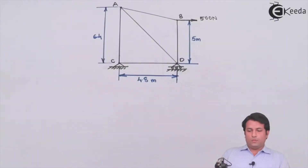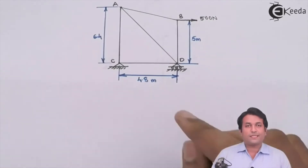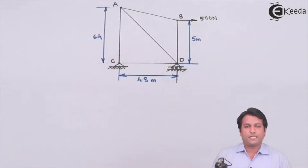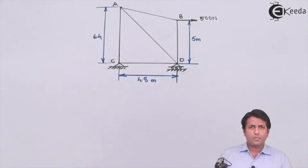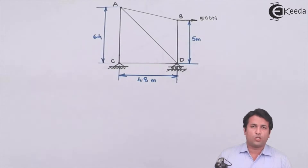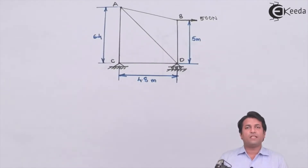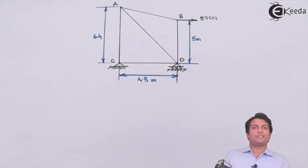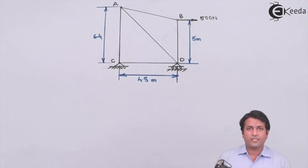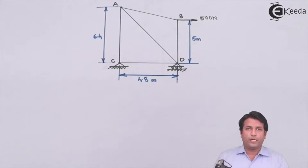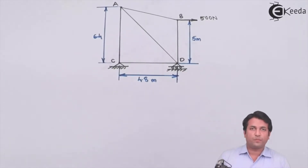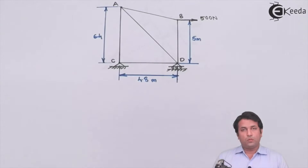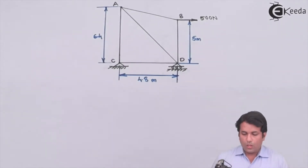Students, this is the second example we have for special cases in trusses. We are clear about how to solve a truss example. The first step is finding the stability criteria, then we find the support reactions, and after that we do calculations for each joint to find the force in each member.